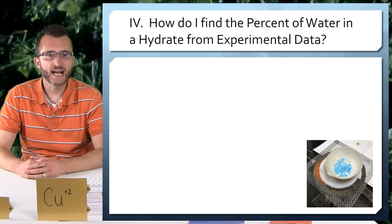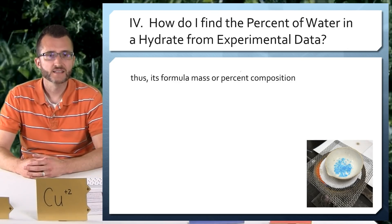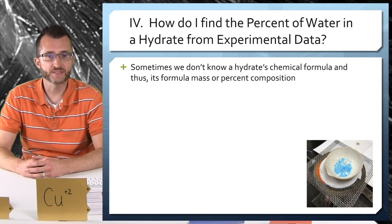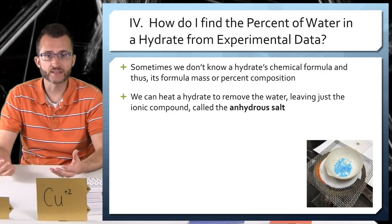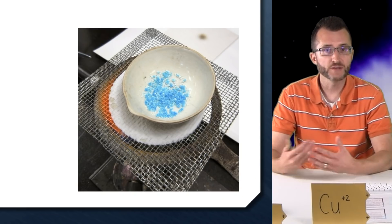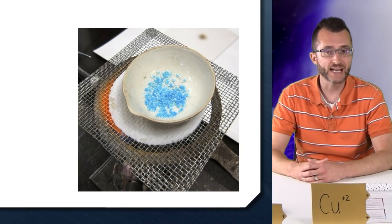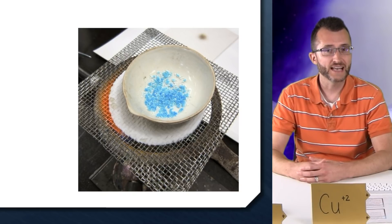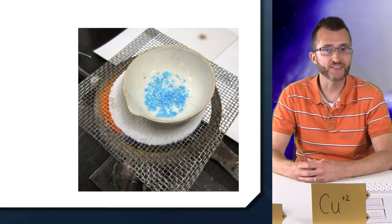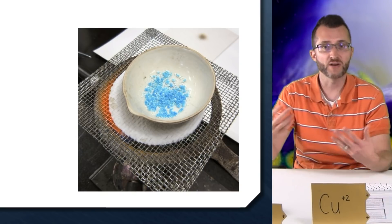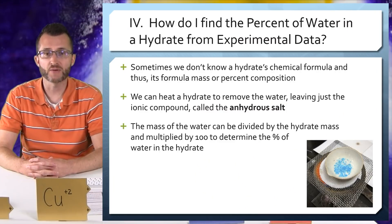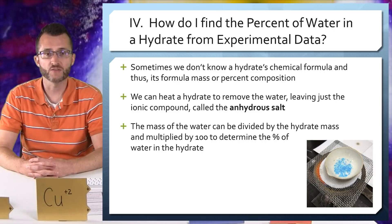How do I find the percent of water in a hydrate from experimental data? Sometimes we don't know a hydrate's chemical formula and thus its formula mass or percent composition. We can heat a hydrate to remove the water, leaving just the ionic compound called the anhydrous salt. For example, copper sulfate pentahydrate is heated over a Bunsen burner to remove the water — we see a color change — and what's left is the anhydrous salt, which means 'without water.' The mass of the water can be divided by the hydrate mass and multiplied by 100 to determine the percent of water.